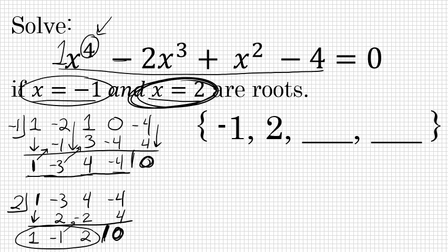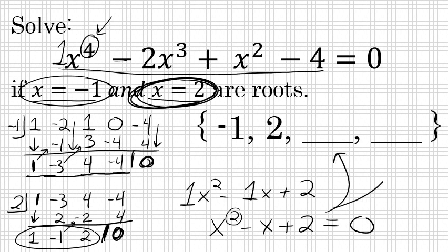Now, the three numbers at the bottom of this second division represent the coefficients of a quadratic, 1x to the second minus 1x plus 2. And that quadratic, x to the second minus x plus 2, when equal to 0, because it's a second degree, has two solutions. Those two solutions are the remaining two solutions, the remaining two roots of the original equation. So at this point, this problem boils down to solving x squared minus x plus 2 equals 0. Those will be our final two roots for the original equation.